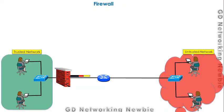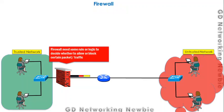The firewall must decide whether to forward that traffic to the trusted network or to drop the packet. For either option, it has to monitor the traffic and make a decision. For that purpose, the firewall needs some specific rules or logic to decide whether to allow or block certain packets.